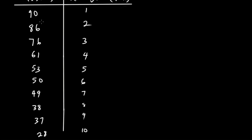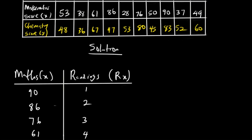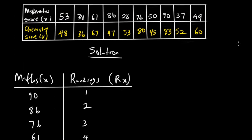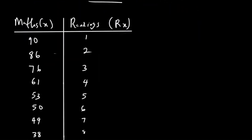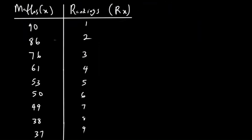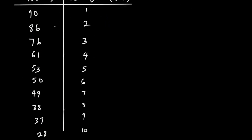So these positions correspond to the scores — first position, second, and so on all the way to 10. If you count the number of students, we have 1 through 10, so our scores will range from rank 1 to rank 10. The same thing will be done for chemistry.